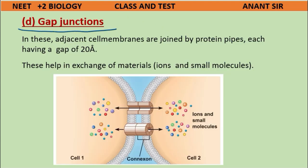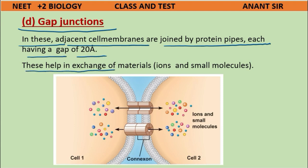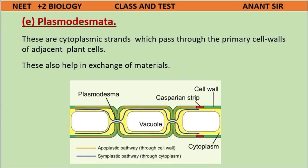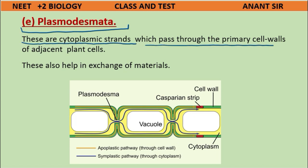D) Gap junctions: adjacent cell membranes are joined by protein pipes, each having a gap of 20 angstroms. These help in exchange of materials, ions, and small molecules. E) Plasmodesmata are cytoplasmic strands that pass through the primary cell walls of adjacent plant cells, also helping in exchange of materials.